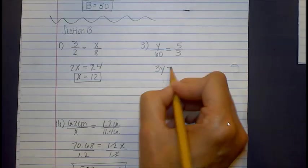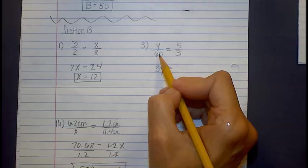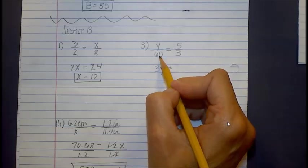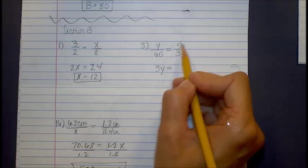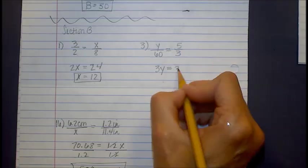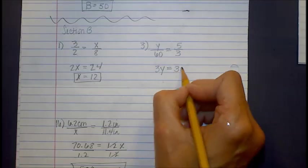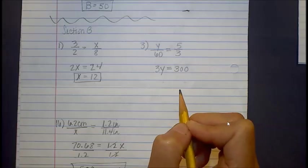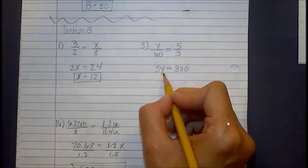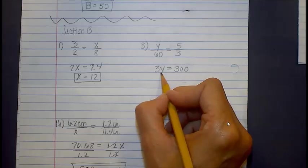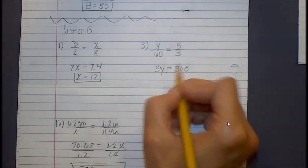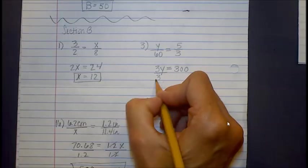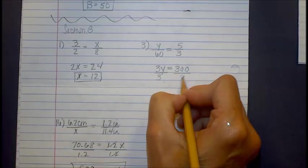So y times 3 is going to be 3y is going to be equal to then the bottom of the left-hand one times the top. So we cross multiply. So this is going to be 60 times 5 is 300. Now, once we have our equation set up with only one unknown, we want to get y by itself. So since 3 is multiplied, we're going to divide the left-hand side by 3 and the right-hand side by 3.